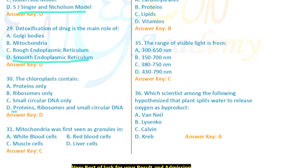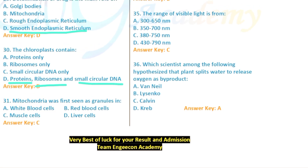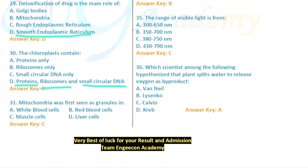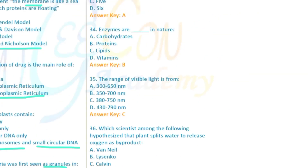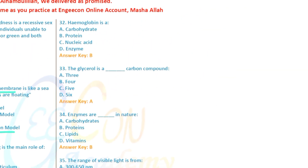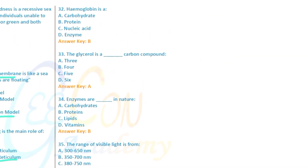Question 31: Chloroplast contains ribosomes, circular DNA, and other components. Mitochondria were first seen in green yield (green algae). Question involves muscle key — muscle fiber identification.